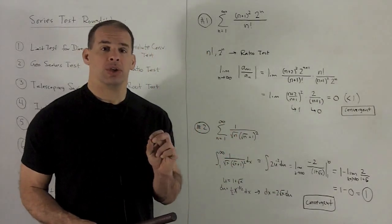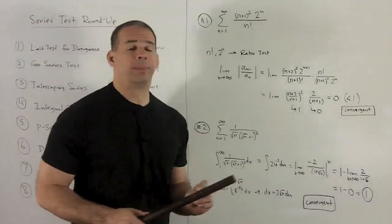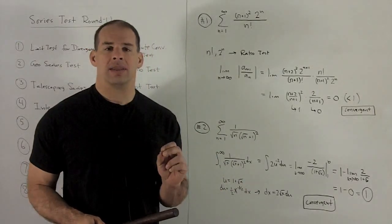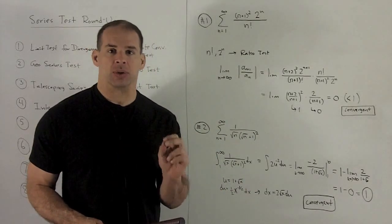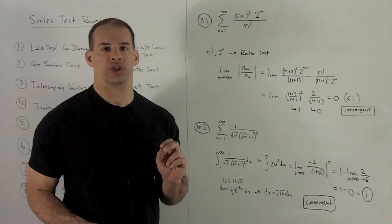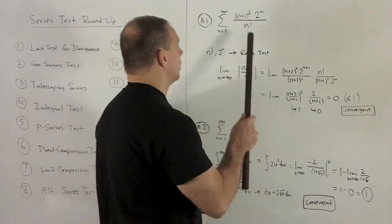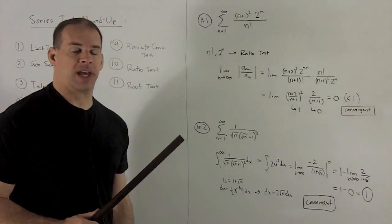Ratio test says you check the limit of your ratio. If it's strictly less than 1, then your series is going to be absolutely convergent. In this case, we're only worrying about convergence. So convergent by the ratio test.